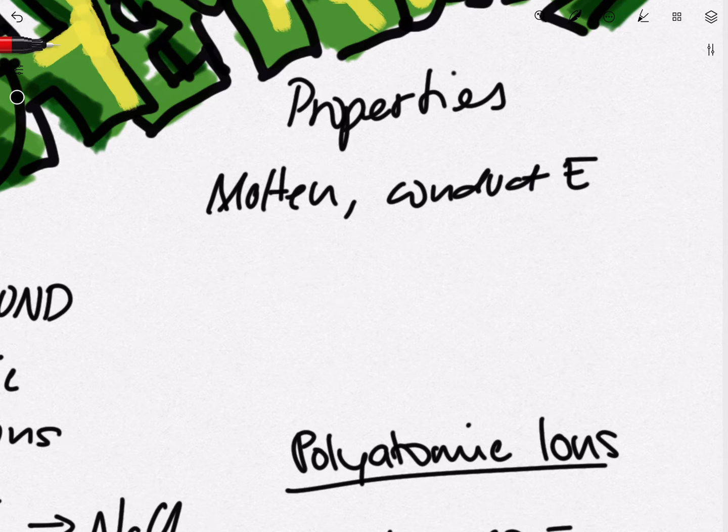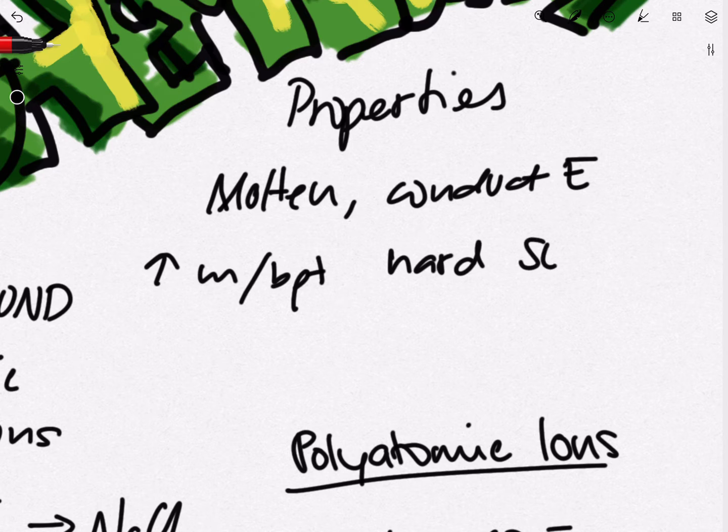Next up, we have high melting and boiling points, showing us that these structures are quite stable and that these are hard solids. Consequently, these will have low volatility, which is a tendency to vaporize. This is because we have very strong forces of electrostatic attraction between our oppositely charged ions.